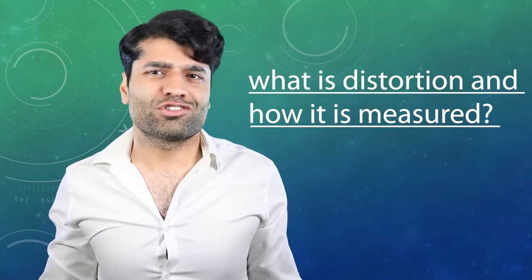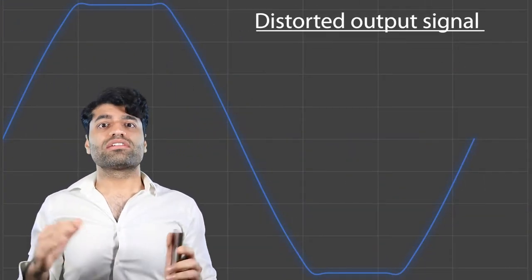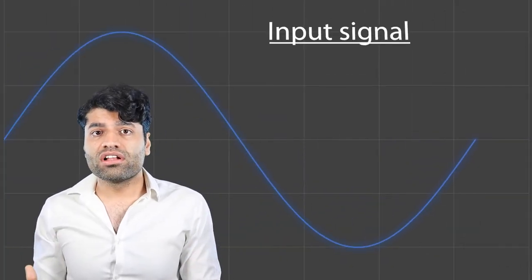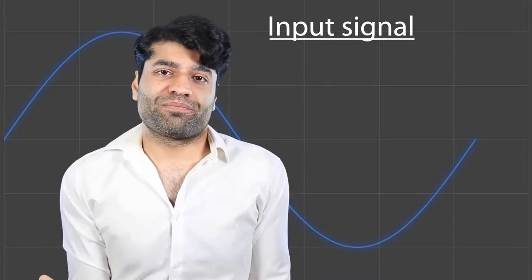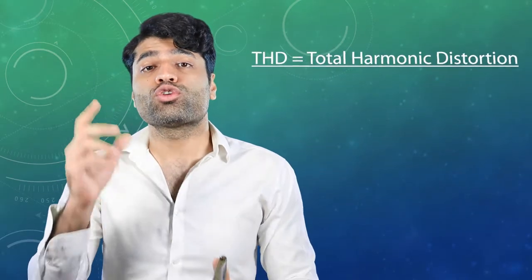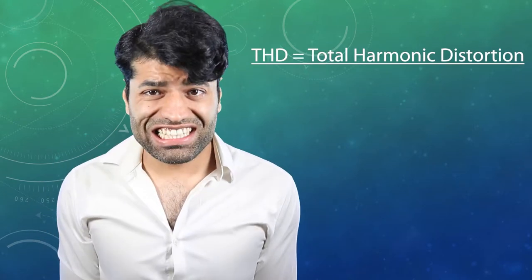Distortion means the output signal doesn't fully represent the input signal due to overloading of the electronic circuitry. The Max SPL is measured by calculating the total harmonic distortion. THD is a percentage of distortion present in the output signal.